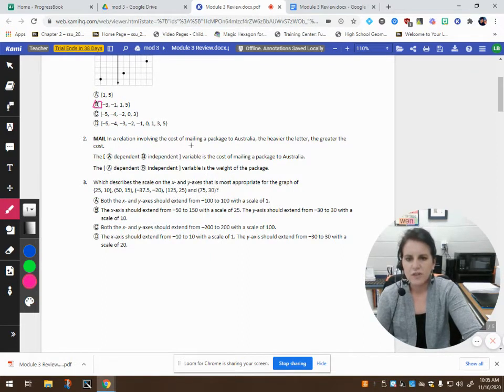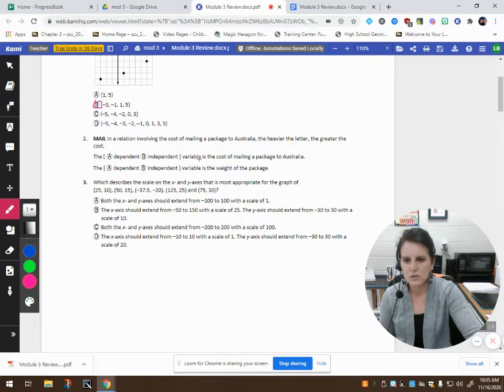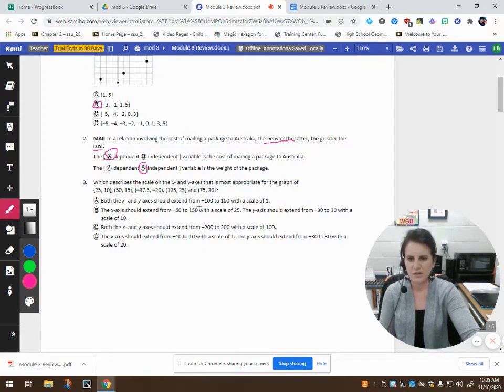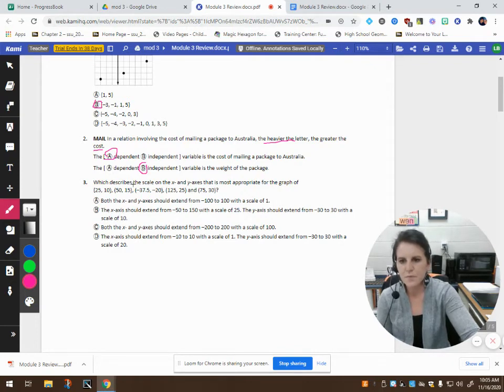In a relation involving the cost of mailing a package to Australia, the heavier the letter, the greater the cost. So the blank variable is the cost of mailing the package. Is that the dependent or independent? Well, it says the heavier the letter, the greater the cost. So the cost depends on how heavy the letter is. Therefore, that makes the weight of the package the independent variable, which describes the scale on the x-axis and y-axis that is most appropriate for the graph.